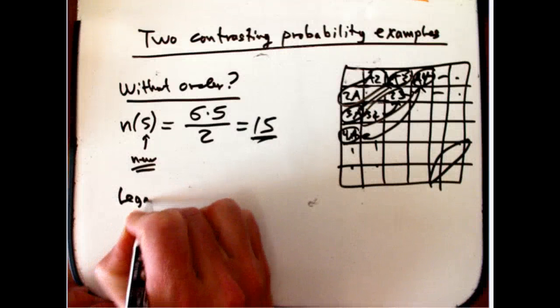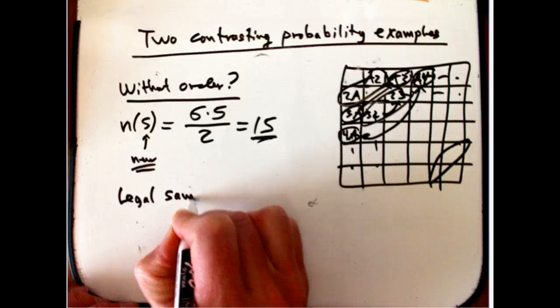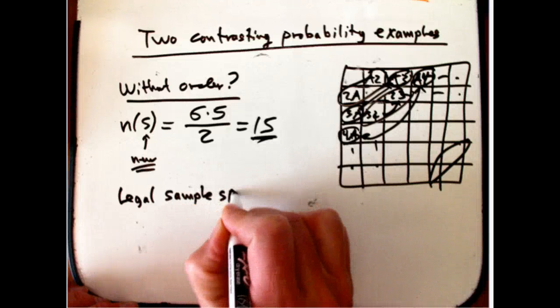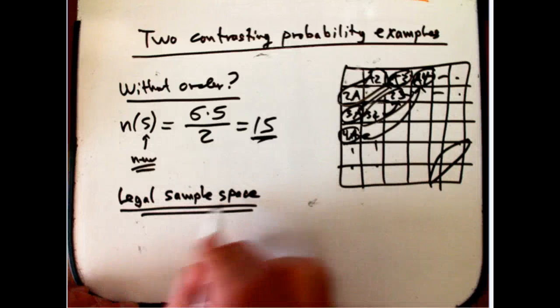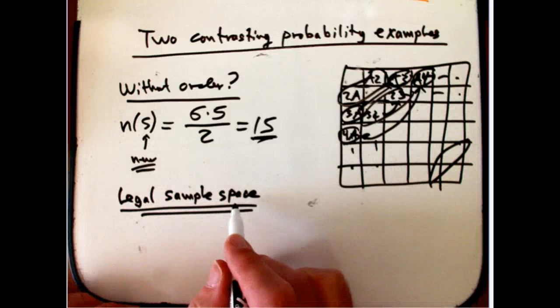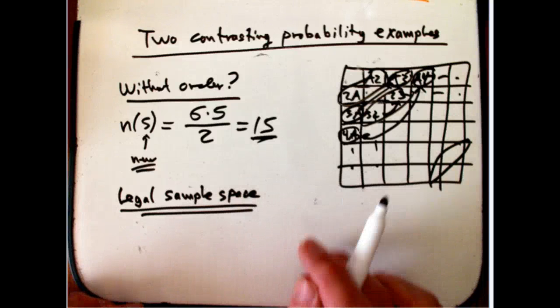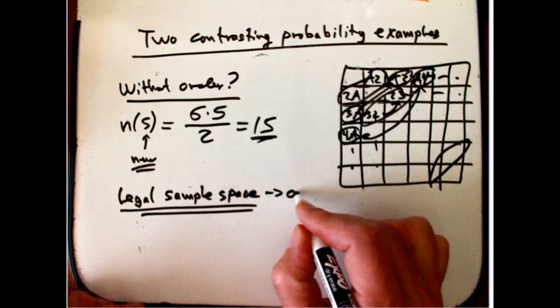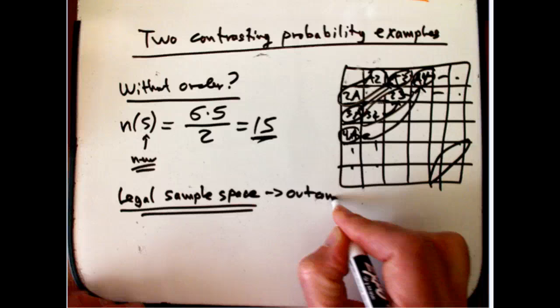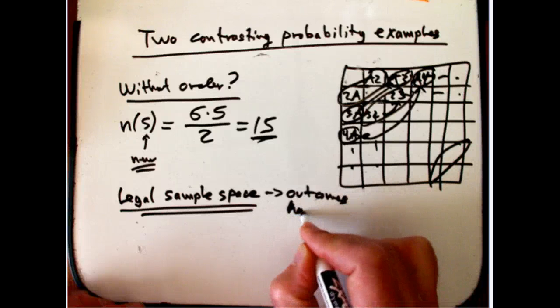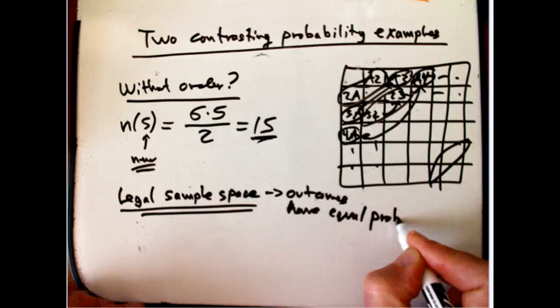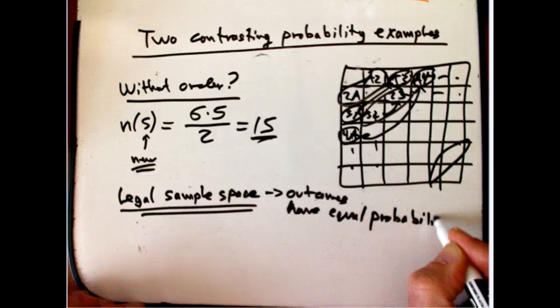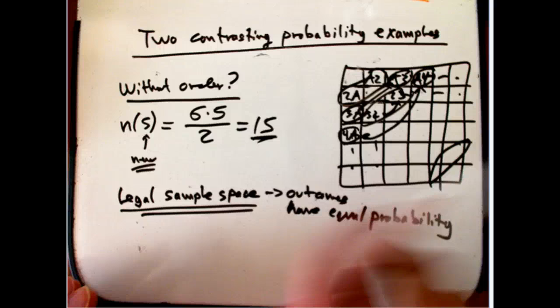So, they have the same probabilities as each other. So, that is a legal sample space from our point of view. At least, when we introduce probability, when we start working on it, we only know how to deal with sample spaces where each outcome has an equal probability.